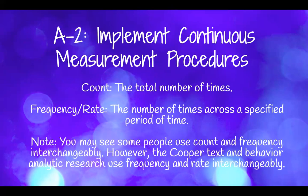The first is count — just the basic number of times a behavior occurred. So if we continue with hitting, your learner hit five times or 12 times. Then frequency or rate — those are typically used interchangeably — refers to the number of times a behavior occurred over a specified period of time. That's the key difference between count and frequency/rate: the period of time added. So a rate might be: my learner hit 12 times per hour.